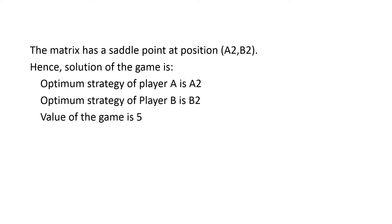Coming to the conclusion: the matrix has a saddle point at position A2B2. The optimum strategy of Player A is A2, the optimum strategy of Player B is B2, and the value of the game is 5. Maximin equals minimax equals 5, at the point A2B2.